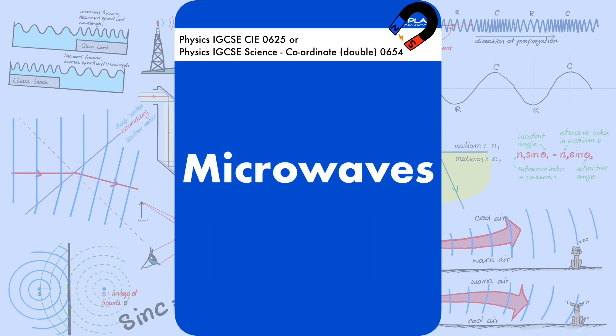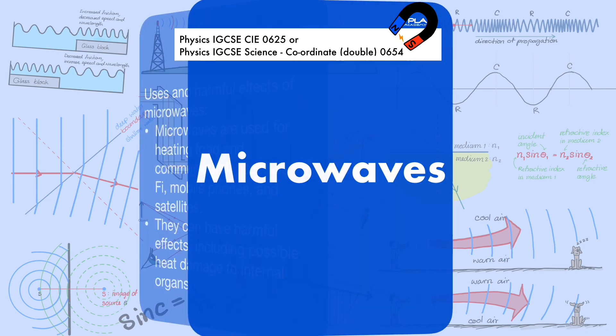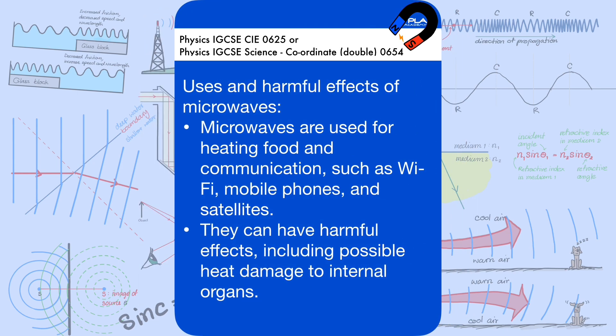Microwaves are used for heating food and communication, such as Wi-Fi, mobile phones, and satellites. They can have harmful effects, including possible heat damage to internal organs.